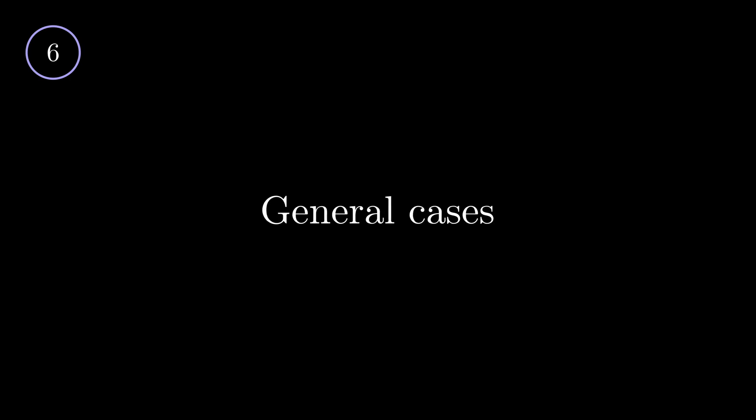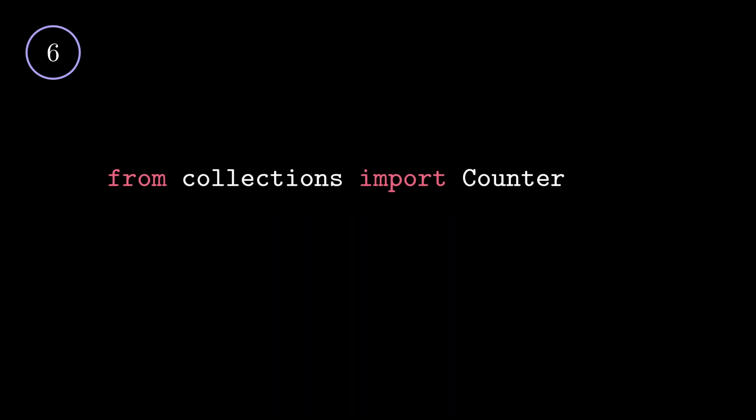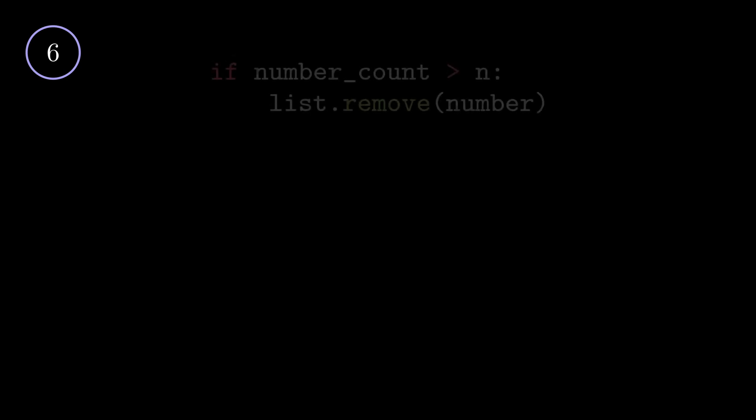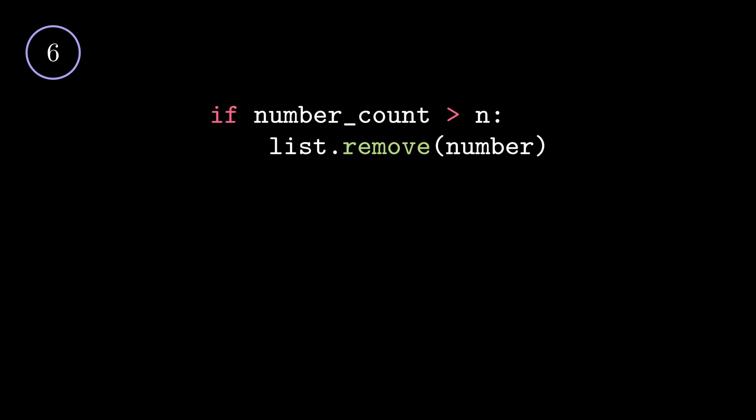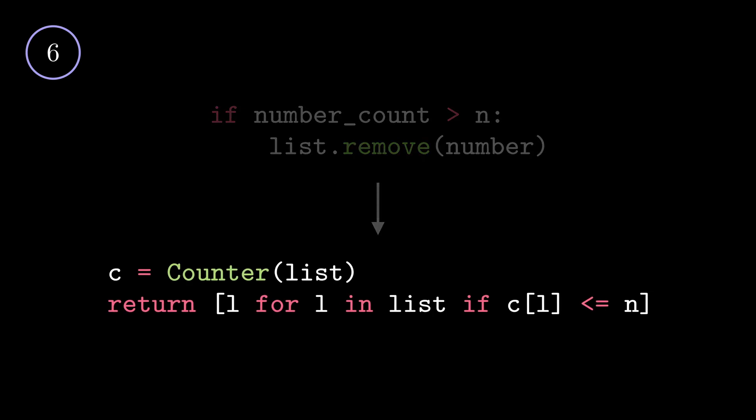Remember how we had an intuitive guess of using a dictionary to count the occurrences a number appears? Python has an inbuilt solution called counter under collections to do just the job. We can pass in the original list into the initialized counter, which is a dictionary in itself, and implement the list comprehension to create a new list with only the numbers that appear less than or equals to n times. Although we initially thought of removing elements from the original list, since we have a better solution, we changed our plan to be more efficient. This leads me to my final tip: Be flexible. Improvise. Adapt. Overcome.